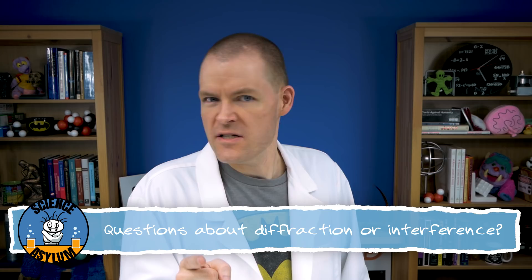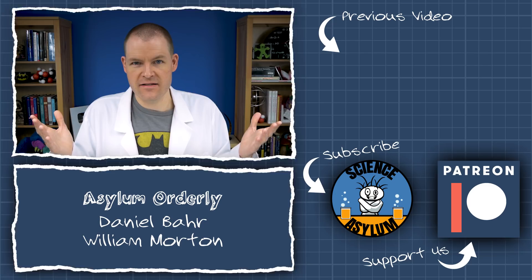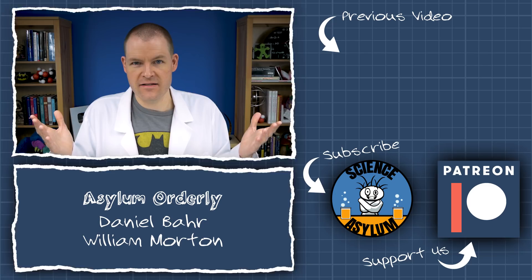The featured comment comes from Ado Saar who asked, If wavelength can vary from medium to medium, wouldn't it be more accurate to define color with frequency? On a scale like ours, yes, we have to define color with frequency for that exact reason. But on a microscopic level, light is never really inside a material. Anyway, thanks for watching!